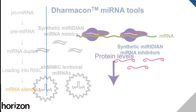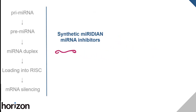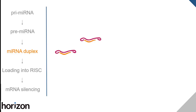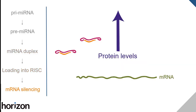Meridian microRNA hairpin inhibitors are single-strand, chemically enhanced RNA oligonucleotides. You can choose an inhibitor for either of the mature microRNA strands. Our hairpin inhibitors are delivered to the cytoplasm, where they bind and sequester the complementary mature endogenous microRNA strand — they act like microRNA sponges. This reduces the microRNAs available for mRNA silencing, increasing protein levels.